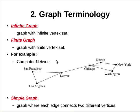Now consider a computer network made up of data centers and communication links between them. This computer network can be modeled using a graph, where each data center location is depicted as a vertex and each communication link by an edge.